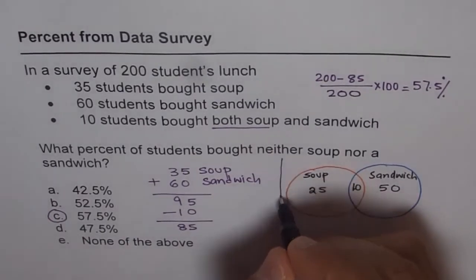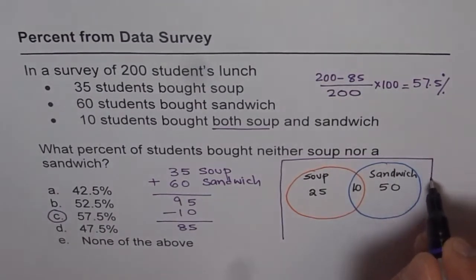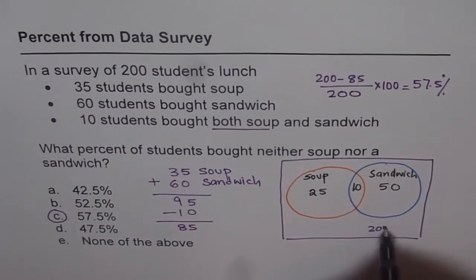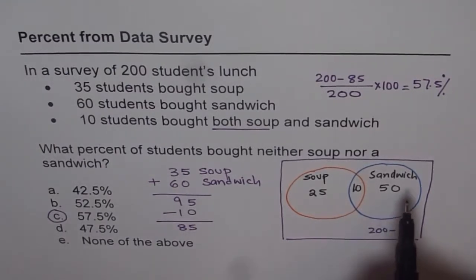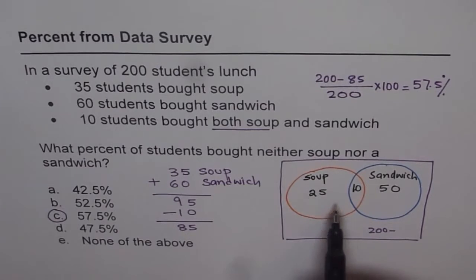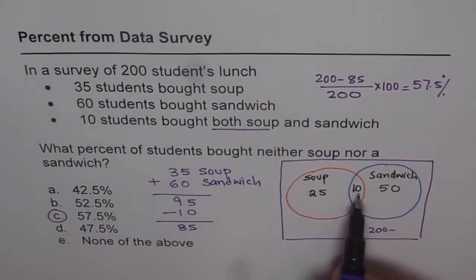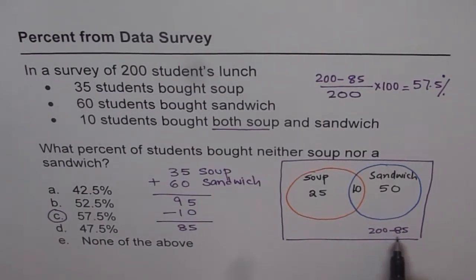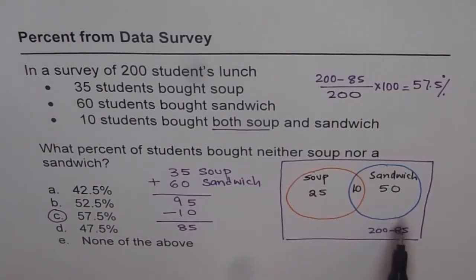Let me complete this diagram. The whole rectangle represents a total of 200. Whatever number is not involved in buying soup or sandwich goes outside the circles. So inside we have 50 plus 10 equals 60, and 60 plus 25 equals 85. So 200 minus 85 gives the students who did not buy anything. We get the same answer — it's a good representation of the data, and that is what we call a Venn diagram.